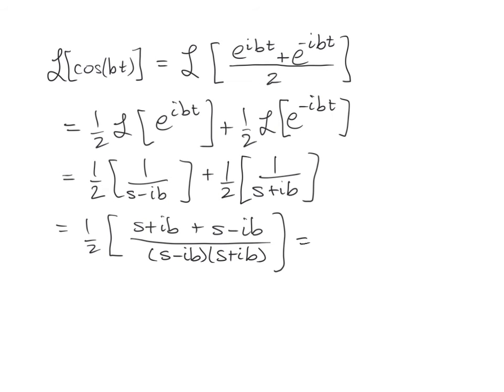We can then go ahead and combine like terms. Adding upstairs, we end up with the S's doubling up and the IB's canceling out. So that's going to make 2S. And then downstairs, we actually have the difference of squares. So that's going to be S squared minus I squared B squared.